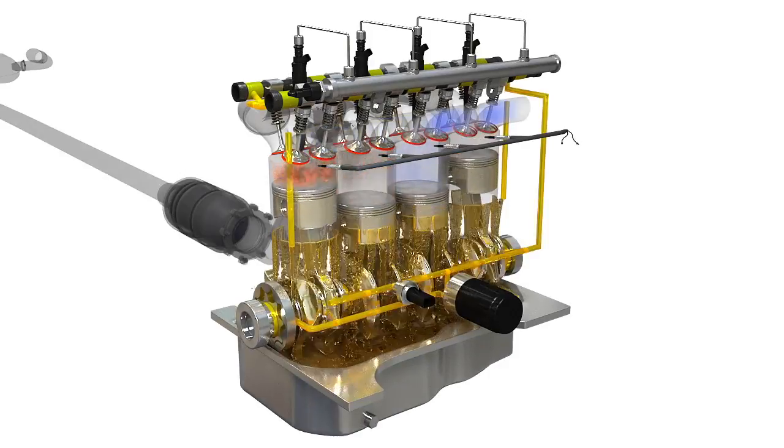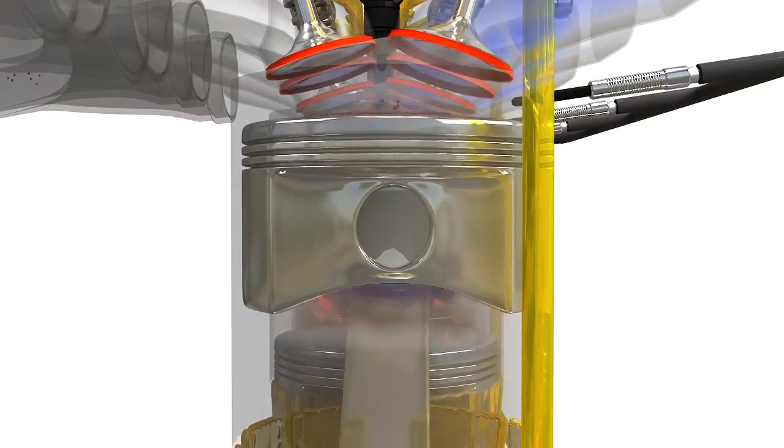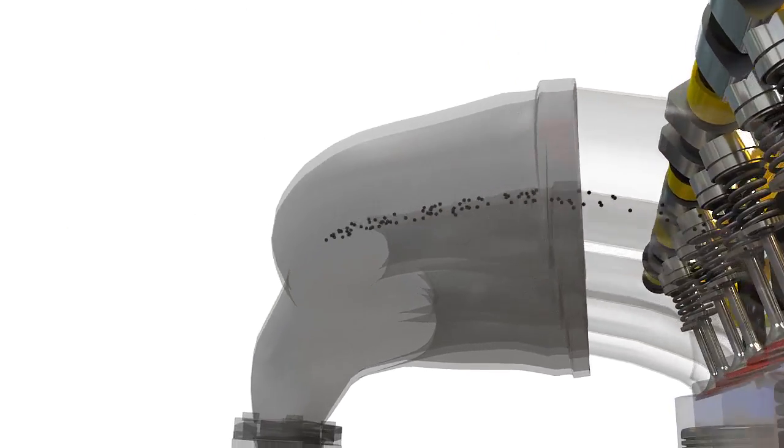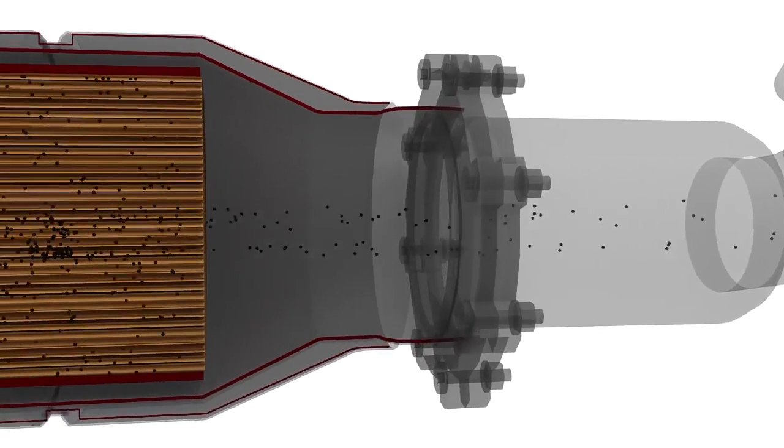When diesel fuel is burned at high temperatures in your engine, fine soot particles are created that are 150 times smaller in diameter than a human hair. Most of the particles exit through the exhaust system where they are trapped by the diesel particulate filter.